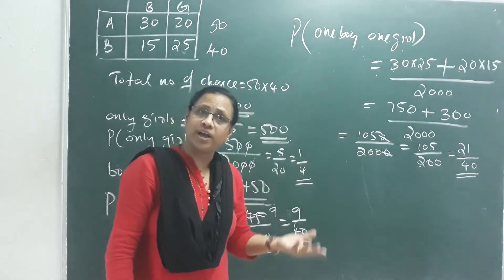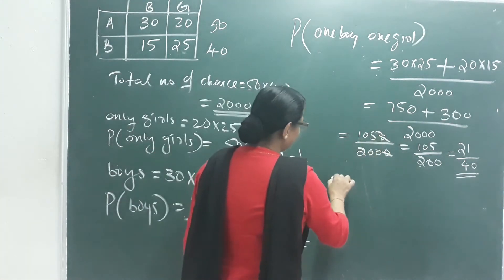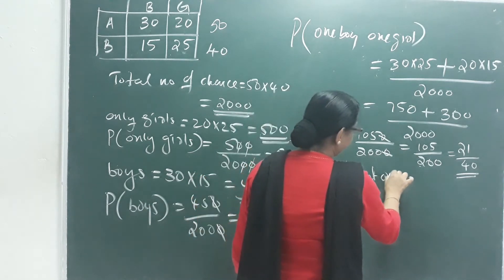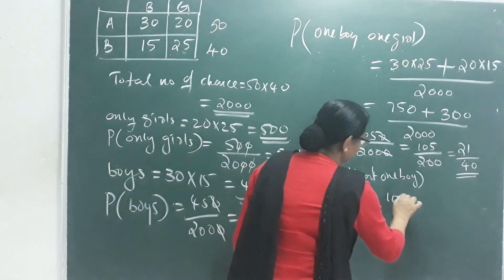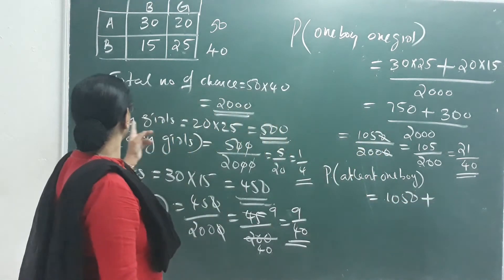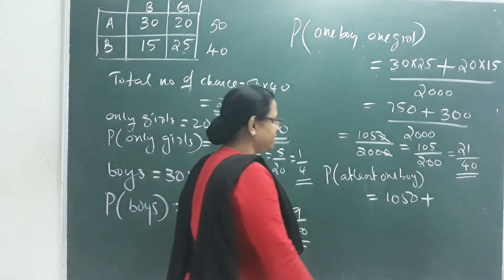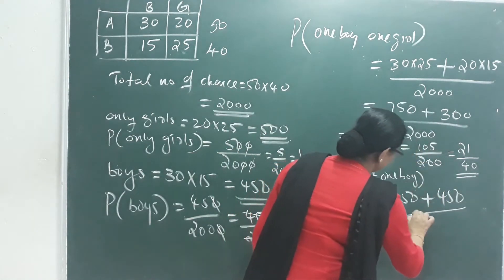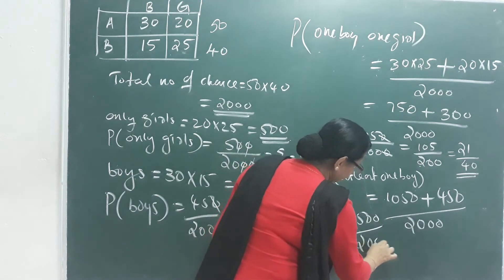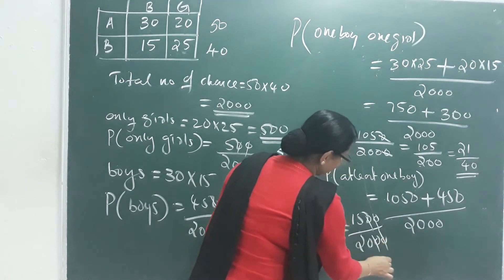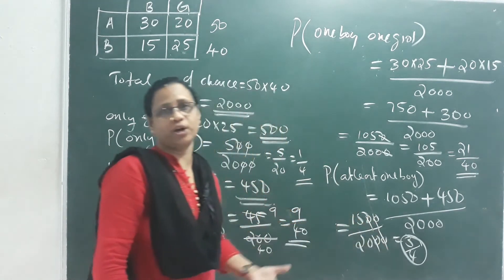For at least one boy, we add the chance of two boys and the chance of one boy. That is 450 plus 1050 divided by 2000, which equals 1500 divided by 2000. Simplifying: 15 by 20, which means 3 by 4 chance. At least one boy is 3 by 4.